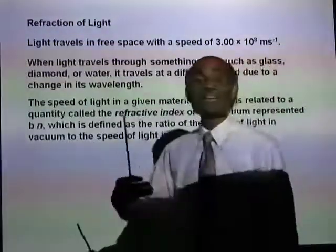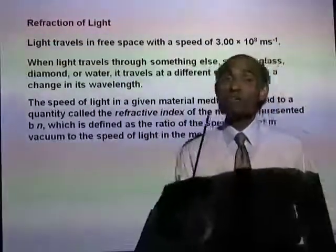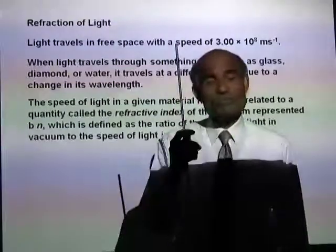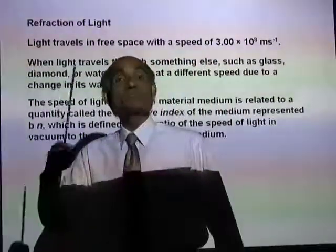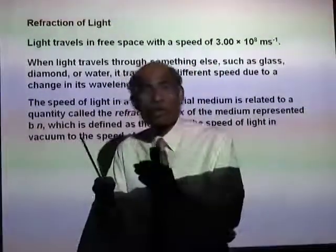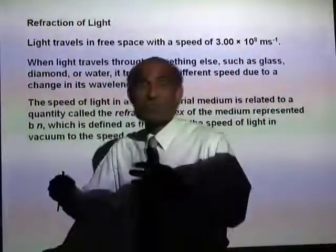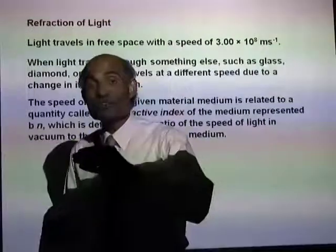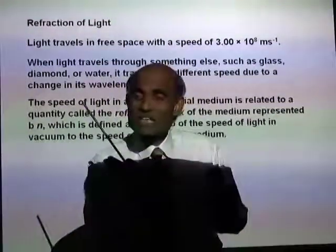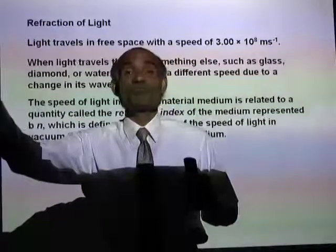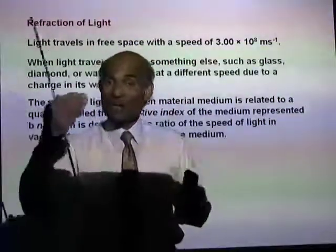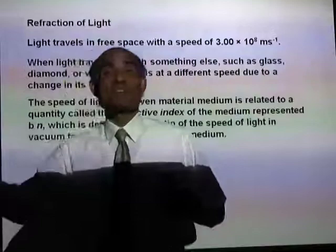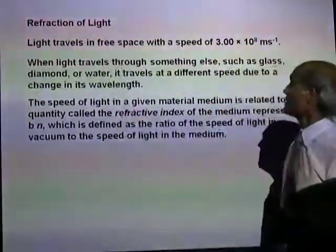What happens when the speed is reduced? The reduction in speed is always associated with a change in the direction of propagation. Whenever there is a sudden change in speed — like going on a bicycle on a beautiful road and suddenly coming to a very muddy road — your speed suddenly changes, and that creates a deviation in your direction of motion. A sudden change in speed always produces a deviation in the direction of motion, and it is that phenomenon we call refraction of light.